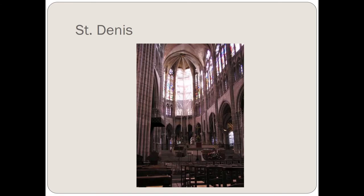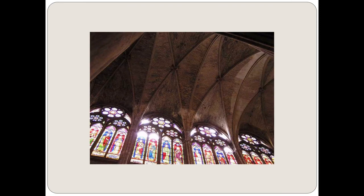Here's an example of Saint Denis, the first Gothic cathedral. You can tell how differently it looks from the Romanesque style — much more light, much more verticality, and the walls are much thinner. That is due to the flying buttresses that Gothic architects used to enable them to extend those walls upward. If you look closer, you can see the ribbed vaulting of the ceiling and the stained glass, which are very typical features of Gothic architecture.